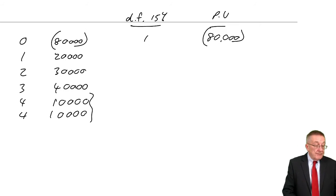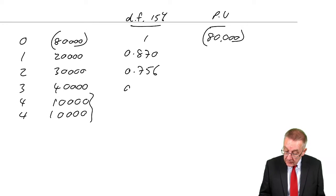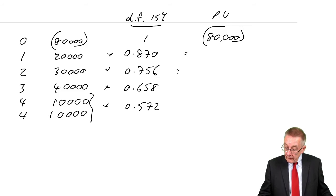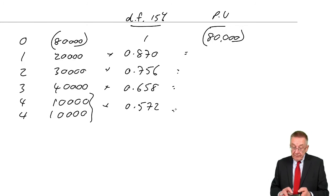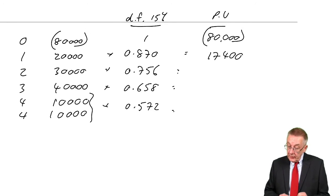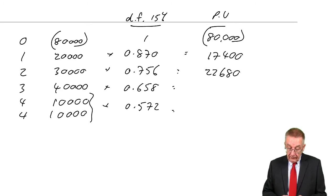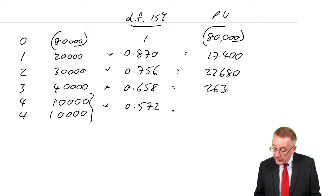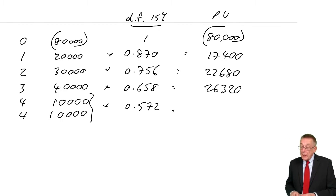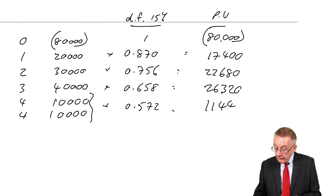The discount factors from your tables, the 15% column. For one year 0.870, two years 0.756, three years 0.658, and 0.572. Therefore the present values: 20,000 times 0.87 is 17,400; 30,000 times 0.756 is 22,680; 26,320; and finally I'll do the two together again, a total of 20,000 in four years, times 0.572, is 11,440.